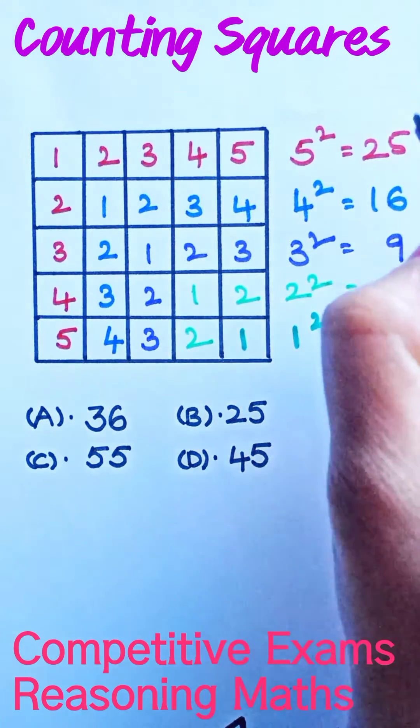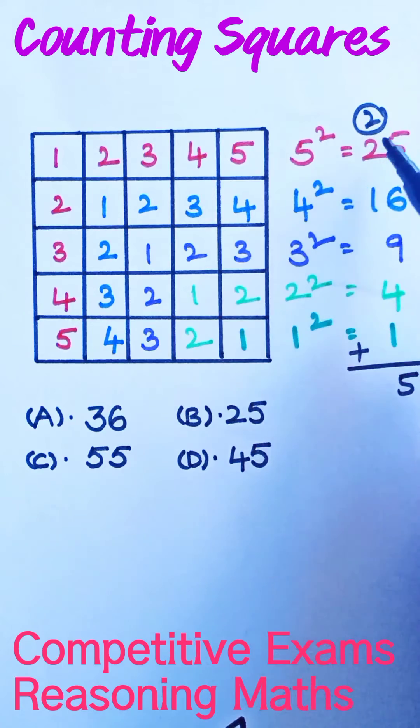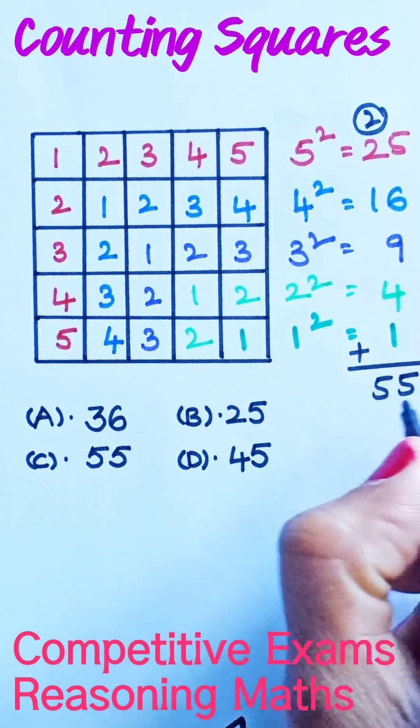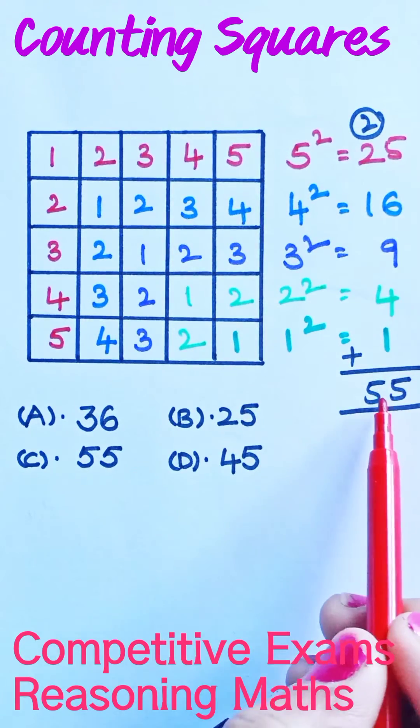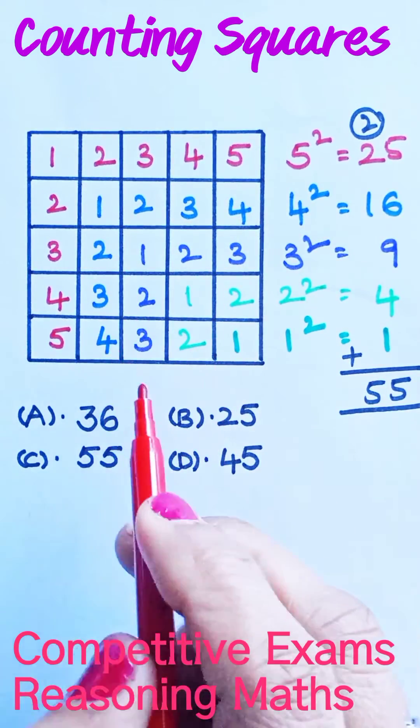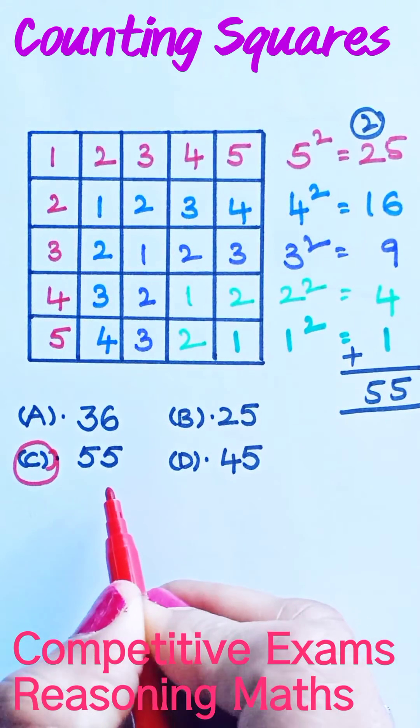25 plus 16, 41. 41 plus 9, 50. 50 plus 4, 54. 54 plus 1, 55. So what is the answer? It is 55. There are 55 squares present inside the given figure, so option C is the correct answer.